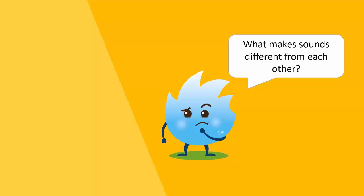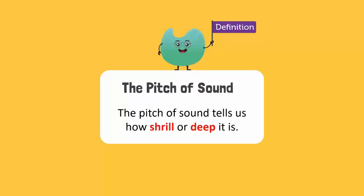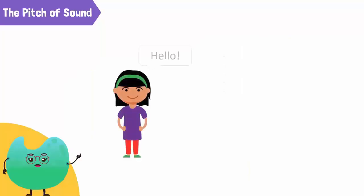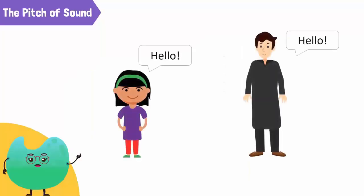We can identify sounds according to how they differ. Sounds can differ in pitch and loudness. Let's look at both terms one by one. The pitch of a sound tells us how shrill or deep it is. Observe that the girl's voice is shrill and the boy's voice is deep.